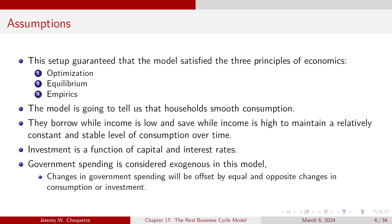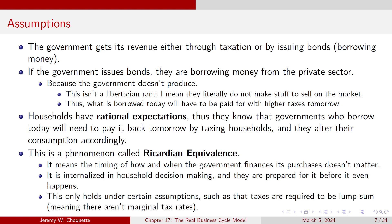This model tells us that households smooth their consumption — they borrow while income is low and save while income is high to maintain a relatively constant and stable level of consumption over time. Investment is a function of capital and interest rates, and government spending is considered exogenous. Any changes in government spending will be offset by equal and opposite changes in consumption or investment.